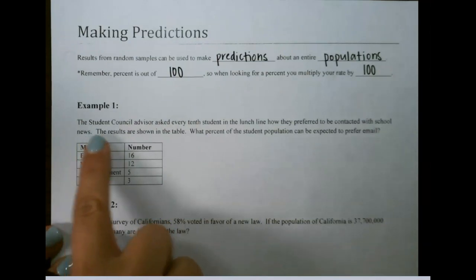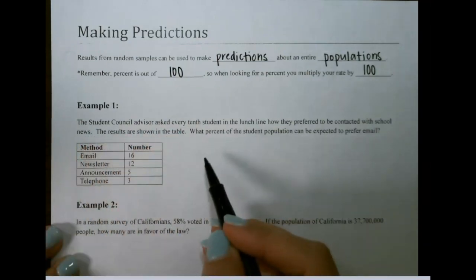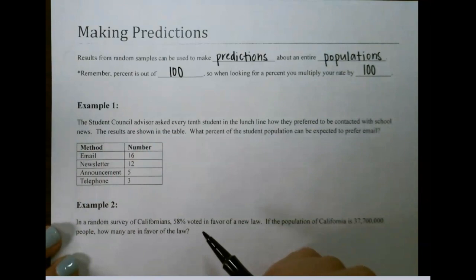For our first example, the student council advisor asked every tenth student in the lunch line how they preferred to be contacted with school news. The results are shown in the table. What percent of the student population can be expected to prefer email?